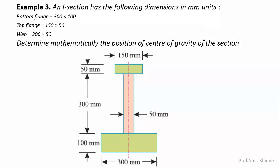Today we are discussing a new problem on an I-section with the following dimensions in millimeters: bottom flange of 300 by 100 millimeter, top flange of 150 by 50 millimeter, and web of 300 by 50 millimeter. We need to find mathematically the position of the center of gravity of the section. This I-section is not symmetrical about the X-X axis.